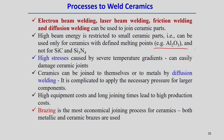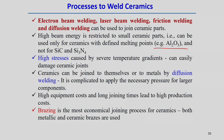One example where high-energy beam welding applies is Al2O3. High stresses caused by severe temperature gradients can easily damage ceramic joints, because ceramics cannot absorb deformation. Ceramics can also be joined to themselves or to metals by diffusion welding processes, but it is very complicated. Large amounts of pressure are required, specifically for larger components. High equipment cost and long joining times normally lead to high production costs when following diffusion welding processes.